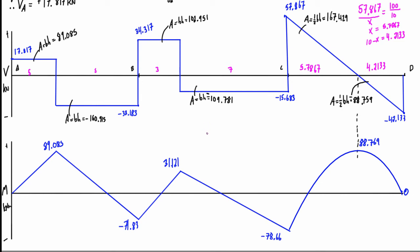The question also asks for the reactions AY, BY, CY, and DY. Looking at the shear force diagram: cutting just to the right of A, we have the reaction AY upward and a positive shear of 17.817 kN on the right side of that cut. For vertical force balance, AY must equal 17.817 kN upward.